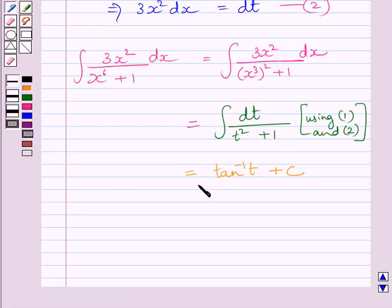Since a = 1, we get (1/a) tan⁻¹(t) = tan⁻¹(t) + C, where C is the constant of integration.